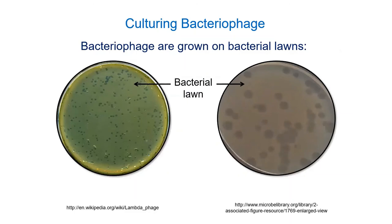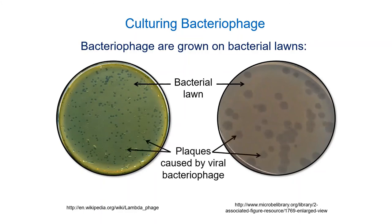If you have a virus that infects bacteria — a bacteriophage — you feed it E. coli by making a lawn of E. coli spread all the way across the plate, then pipette virus particles onto it. Where the virus grows and kills cells, it forms plaques — clear spots where cells have been broken open. You can see different sizes of plaques on different plates, likely representing different types of viruses.